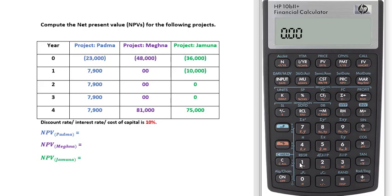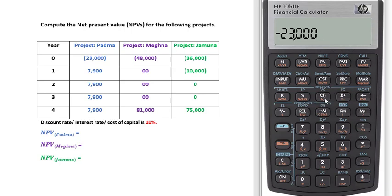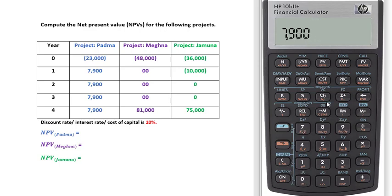Now enter all the project cash flows. For Project A, the initial outflow is 23,000 — since it is negative, press the plus/minus key to change the sign, then press CFJ. This is cash flow 0. Then enter 7,900 for cash flow 1 and again 7,900 for cash flow 2, pressing CFJ after each.